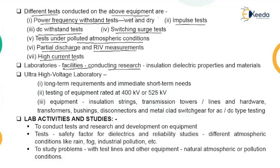In its initial phase, a UHV lab can be used for testing equipment rated from 400 kV or 525 kV. Tests are conducted on insulation strings, transmission towers, lines, hardware, transformers, bushings, disc connectors, and metal-clad switchgear for AC/DC type testing. Equipment must be tested at different voltage levels and may need to withstand high voltage for longer periods.